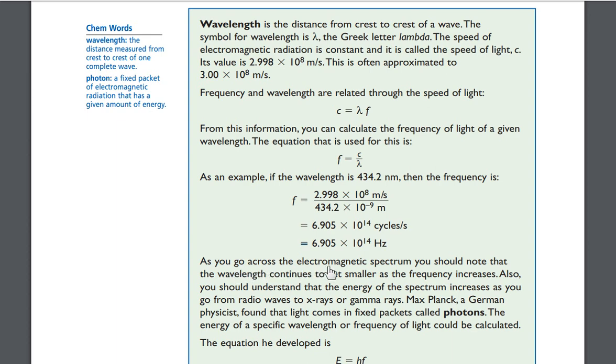As you go across the electromagnetic spectrum, you should note that the wavelength continues to get smaller as the frequency increases. Also, you should understand that the energy of the spectrum increases as you go from radio waves to x-rays or gamma rays. Max Planck, a German physicist, found that light comes in fixed packets called photons. The energy of a specific wavelength or frequency of light can be calculated.